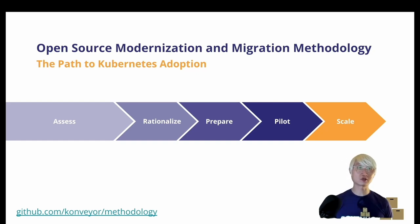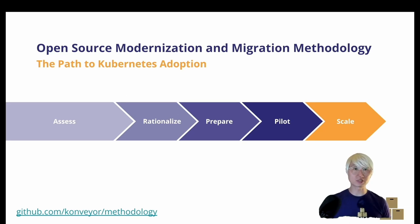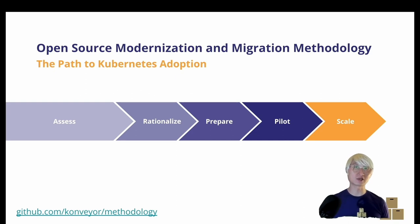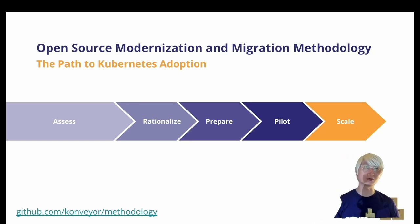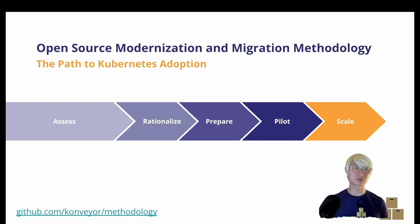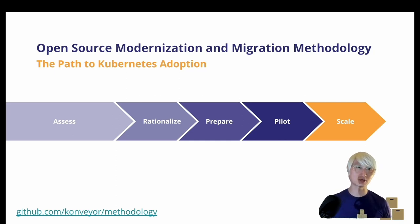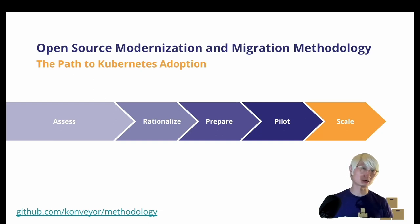After the assessment, you can rationalize and decide: we're going to re-host, re-platform, or re-factor. Then you prepare resources — time, effort, money, and human resources. When you give a pilot project a try and succeed, and gain enough experience, knowledge, and practice, you can scale out across your entire infrastructure and company-wide systems in production. You can find more detailed methodology at github.com/konveyor/methodology.